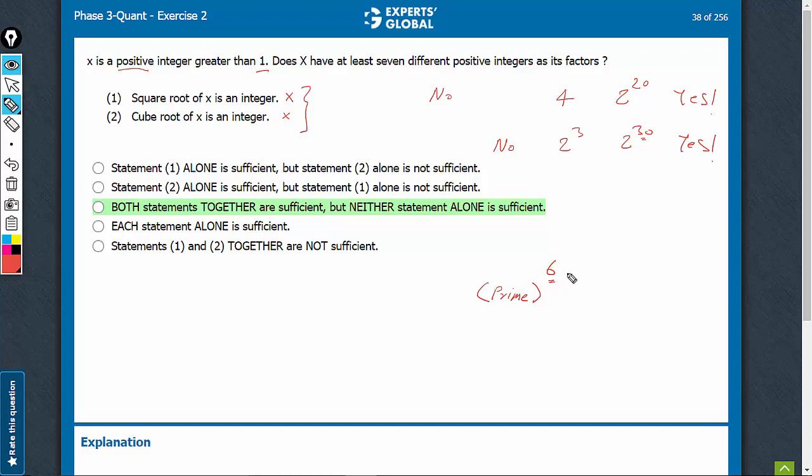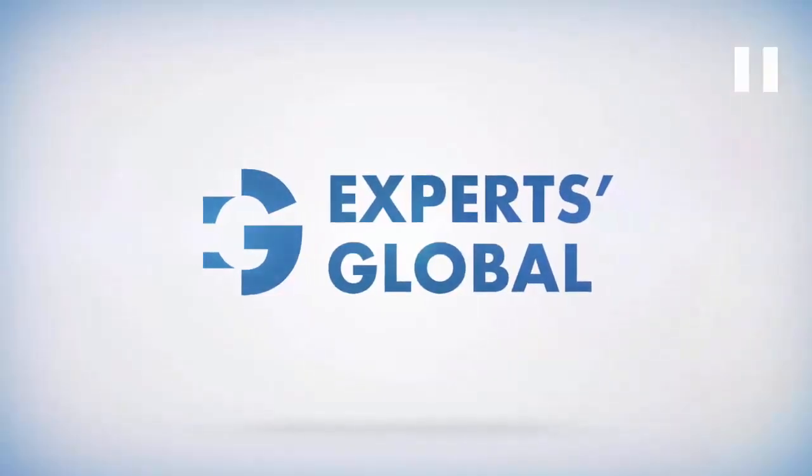of course, x will have way too many factors, much above 7. And therefore, on combining, we can definitely say that x has at least seven factors. C is the right answer.